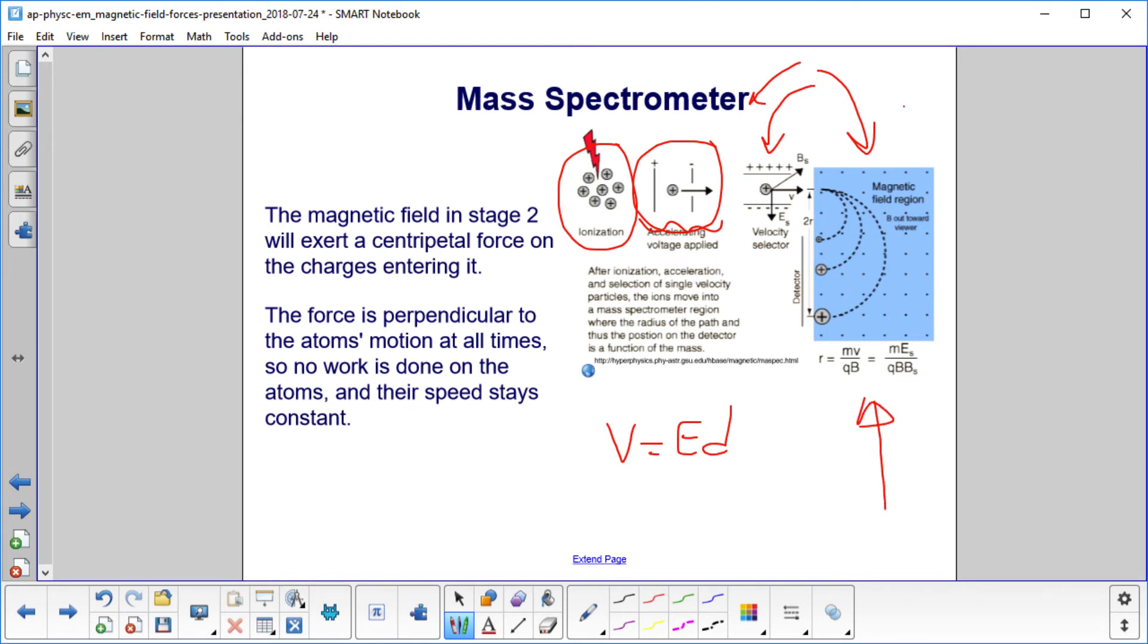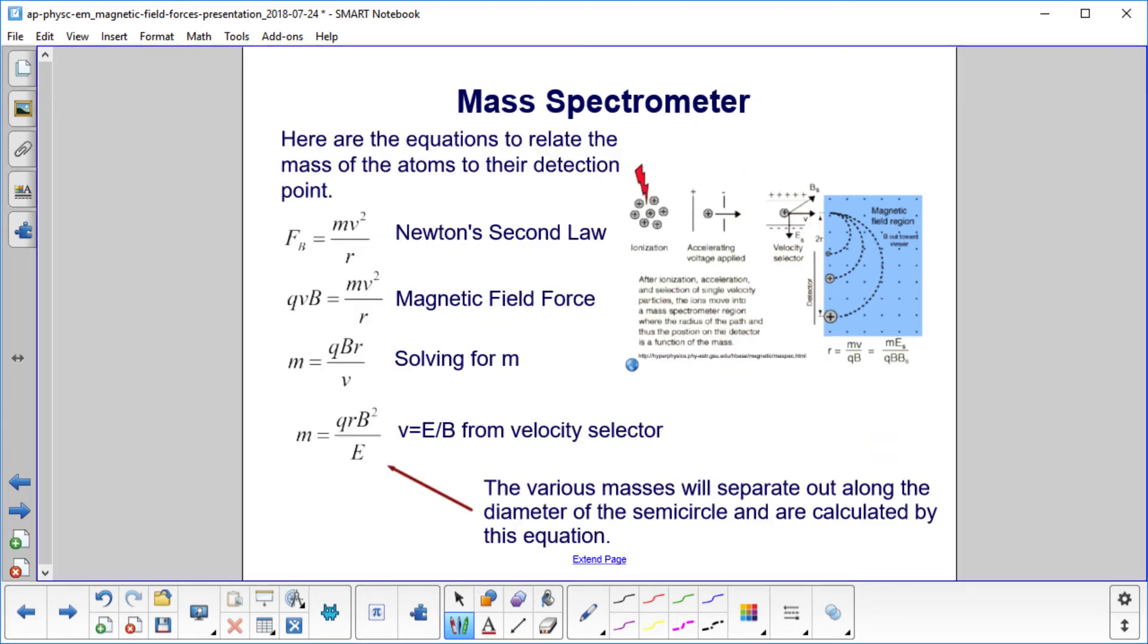We now want to relate the mass of the atoms to where they are detected. When we look at this picture, everybody comes in over here, and depending on their mass, they are bent with different radii.